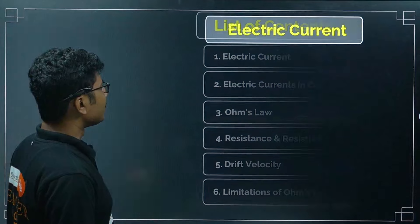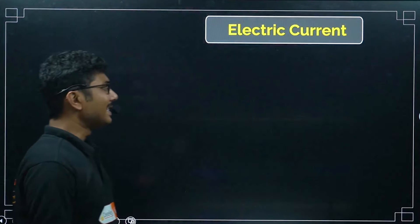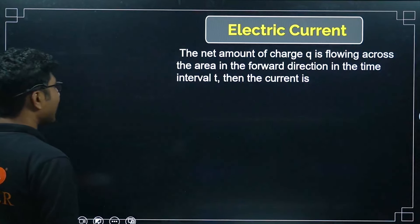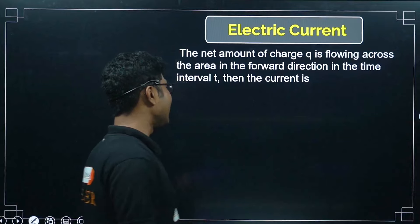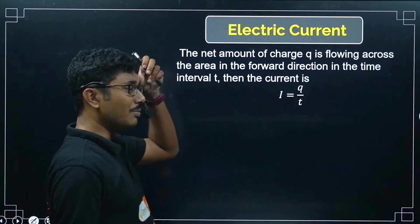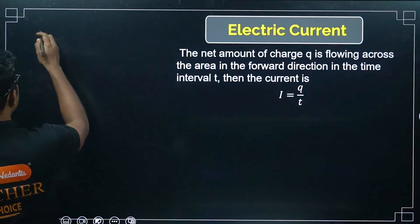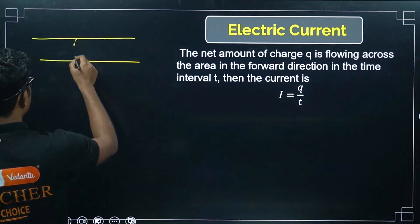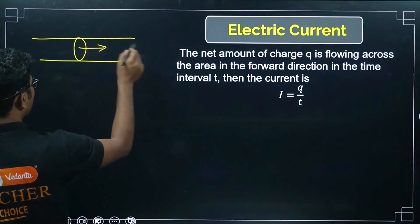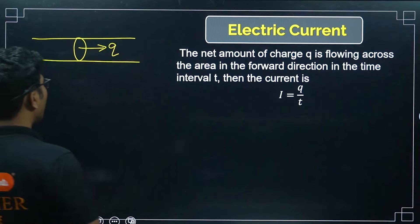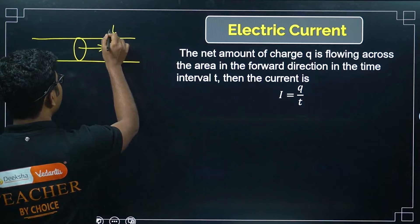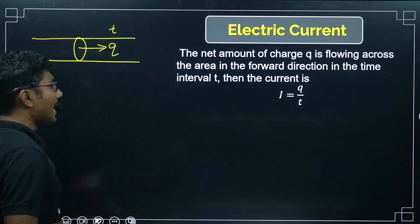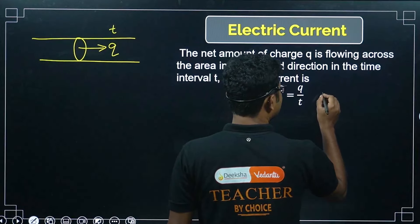First, what is electric current? Electric current is the net amount of charge Q flowing across an area in the forward direction in time interval T. The current is given by I = Q/T. If the charge flowing per unit time is constant, this is called steady current.